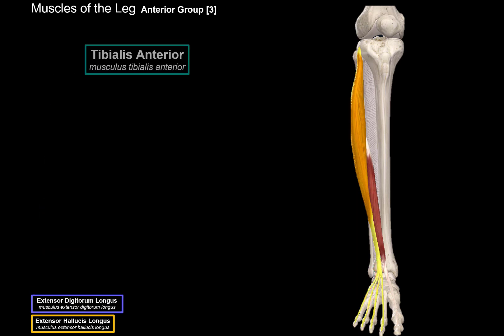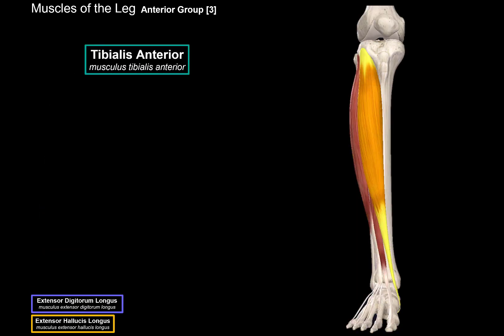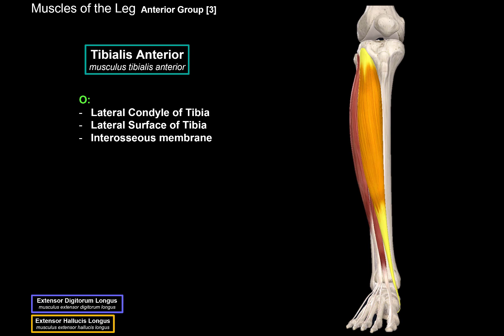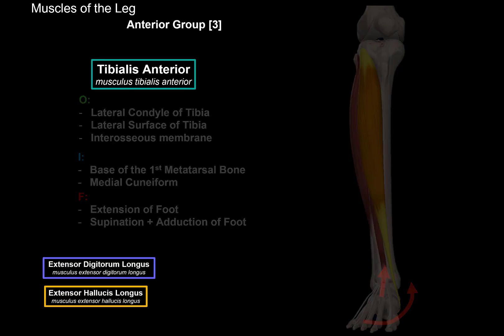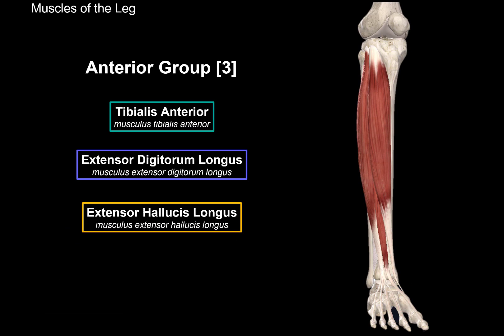Then we have the tibialis anterior. It originates from the lateral condyle of the tibia, the lateral surface of the tibia, and the interosseous membrane. It inserts at the base of the first metatarsal bone as well as the medial cuneiform of the foot. When it contracts, it causes extension of the foot as well as supination and adduction of the foot. That was the anterior group of the leg.